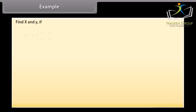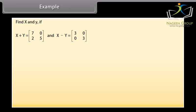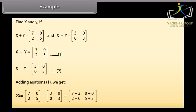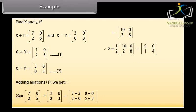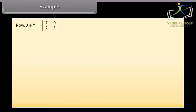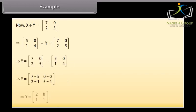Example: find X and Y if X plus Y equals the matrix [7, 0; 2, 5] and X minus Y equals the matrix [3, 0; 2, 8]. Therefore, X equals the matrix [5, 0; 1, 4]. Substituting the value of X into X plus Y and solving, we get matrix Y equals [2, 0; 1, 1].